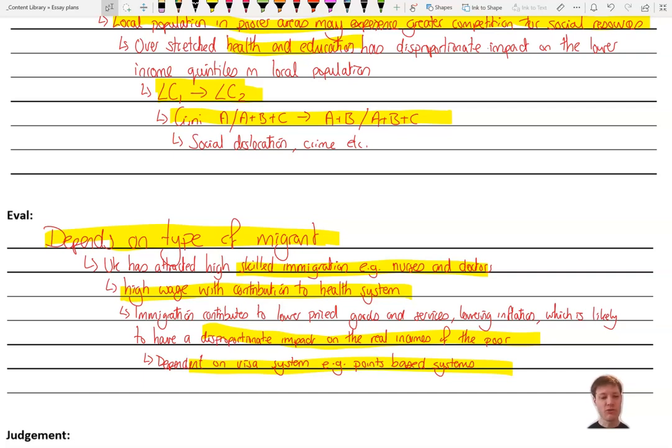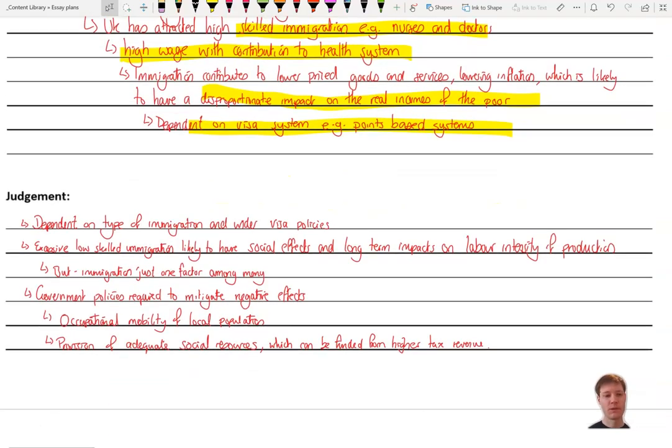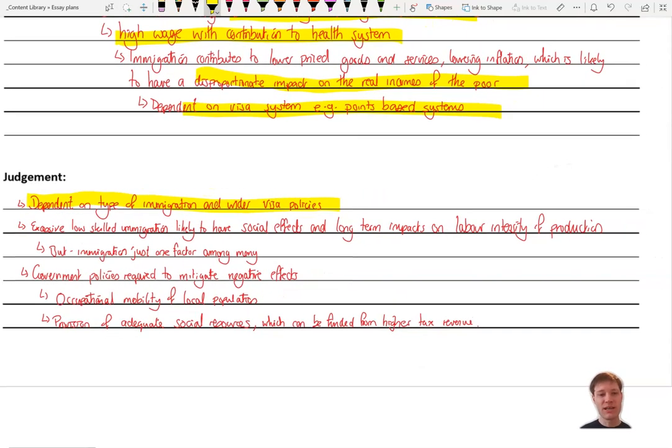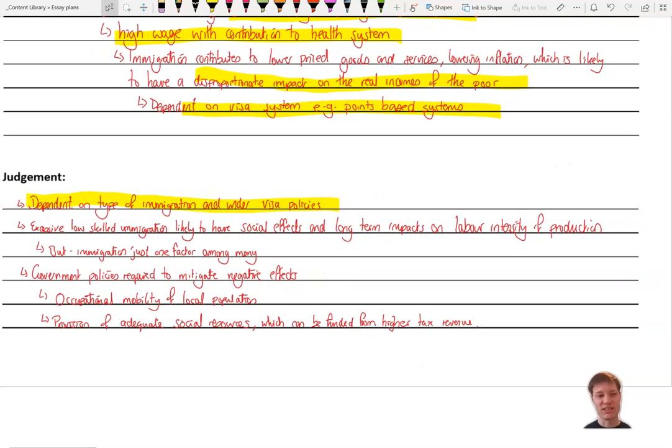Right. Judgment. How can you summarize your arguments and come to an overall judgment? Ultimately, we can see that it is dependent on the type of immigration and wider visa policies. It's clear that economic research has suggested that immigration is generally very good for the economy. It creates a lot of growth. But this has to be weighed against the, if you have excessive low skilled immigration, it does tend to have social effects and long term impacts on the labor intensity of production.